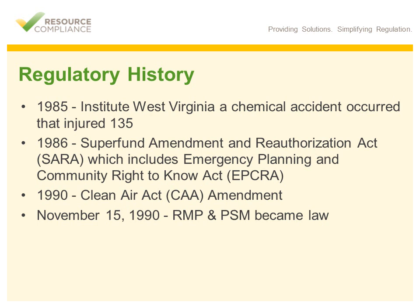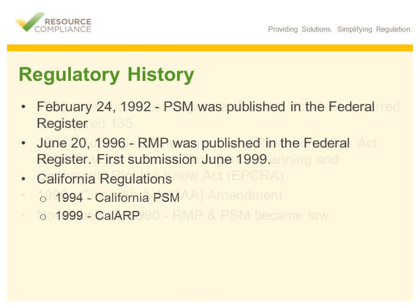In 1990, Congress passed the Clean Air Act, which gave birth to PSM and RMP. On November 15, 1990, RMP and PSM both became law, although they were not posted into the Federal Register for a few more years. On February 24, 1992, Process Safety Management was published into the Federal Register. Four years later, on June 20, 1996, Risk Management Program was published into the Federal Register, with the first submission being due in June 1999.